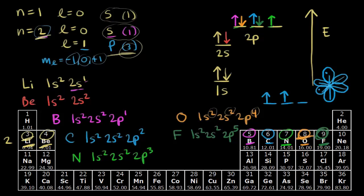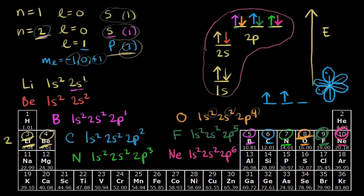Finally, neon has ten electrons. We have one more electron to account for, and one more space — the last electron for neon goes into a two p orbital. So for neon we write one s two, two s two, two p six. Notice we have no more places to put electrons in the first or second energy levels — the second shell is completely full. To add another electron, you would have to open up the third energy level.